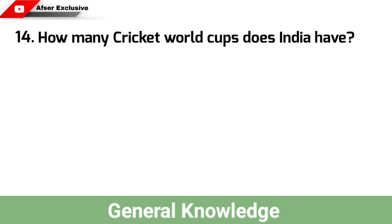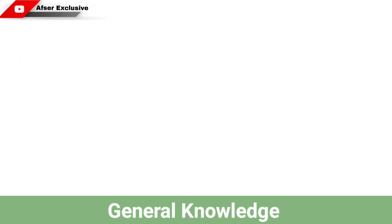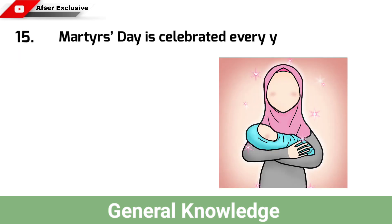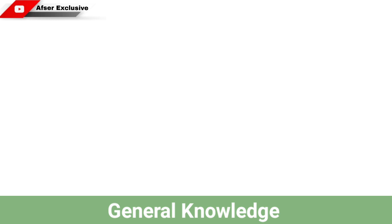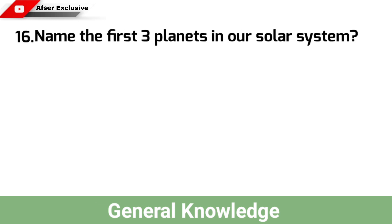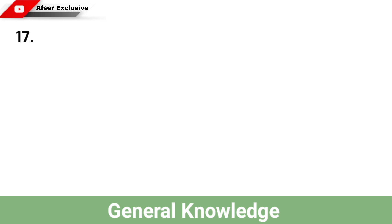How many cricket World Cups does India have? Answer: India has two cricket World Cups. Martyrs Day is celebrated every year on? Answer: 30th of January. Name the first three planets in our solar system? Answer: The first three planets in our solar system are Mercury, Venus and Earth.